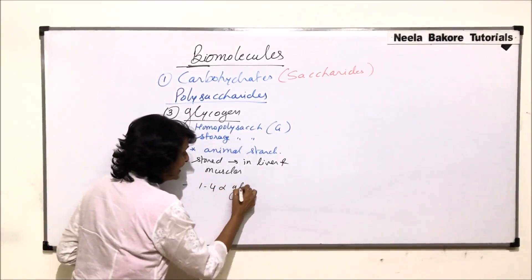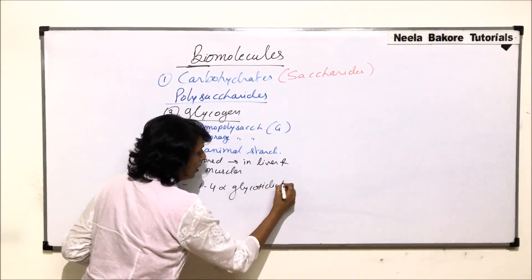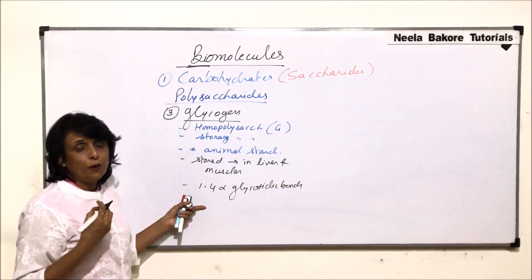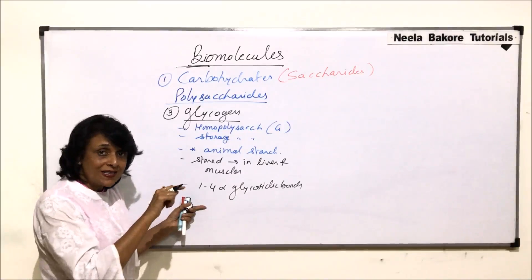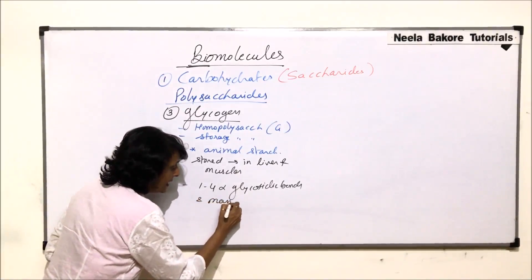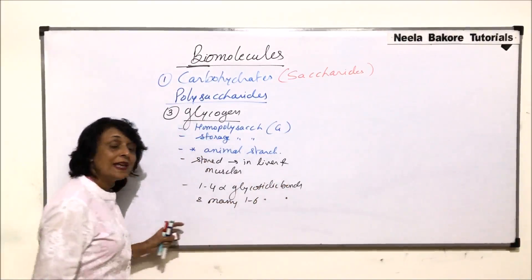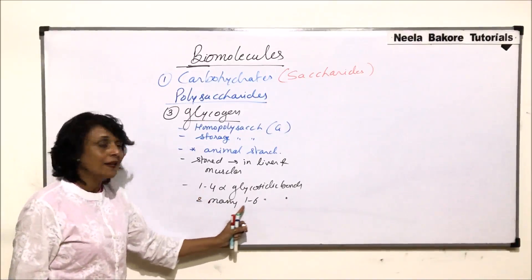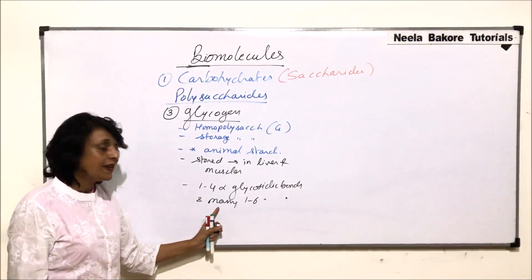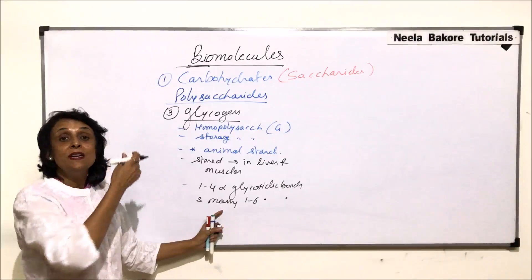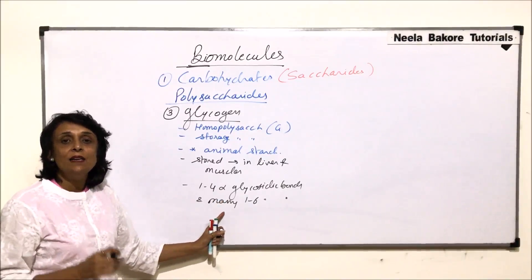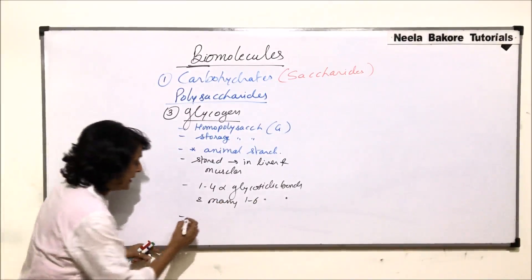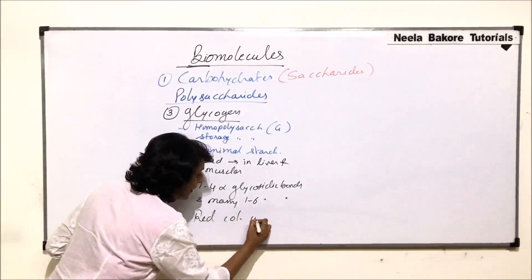Glycogen has 1-4 alpha glycosidic bonds, which give it a linear structure, and many 1-6 glycosidic bonds, meaning it is a highly branched structure. It also gives a color reaction with iodine — it gives a red color with iodine.